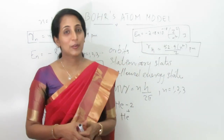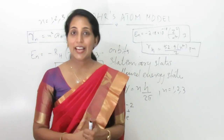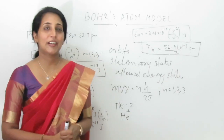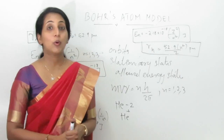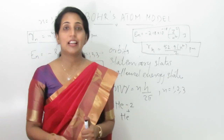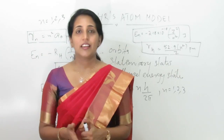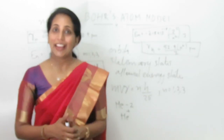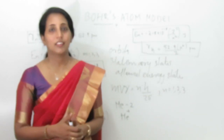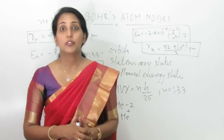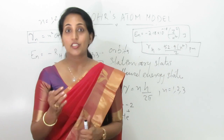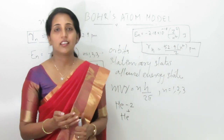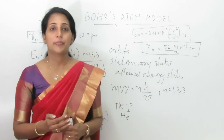So students, it's time to wind up today's class. We have learned Bohr's atom model and his postulates, Bohr's model for the hydrogen atom, and the expressions to find the energy of the nth orbit and the radius of the nth orbit. Thank you.